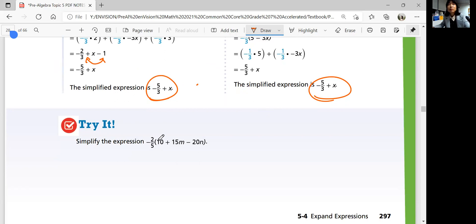All right, let's look at try it. See if you can distribute this by yourself. This one does not have like terms in the parentheses, so you truly have to multiply it out to all the terms using the first one.